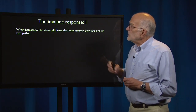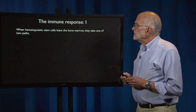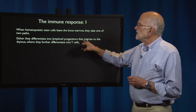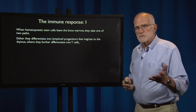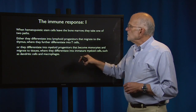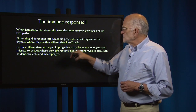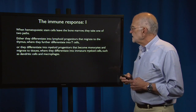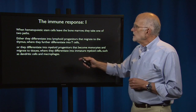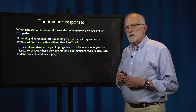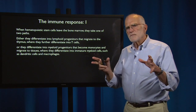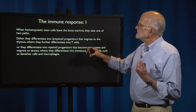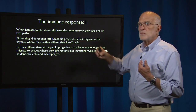When hematopoietic stem cells leave the bone marrow, they either differentiate into lymphoid progenitors — those migrate to the thymus and become T cells — or they differentiate into myeloid progenitors that become monocytes, migrating to tissues where they differentiate into immature myeloid cells such as dendritic cells and macrophages. This diverse population of immune cells is actually all coming out of the same stem cell progenitor population in the bone marrow.